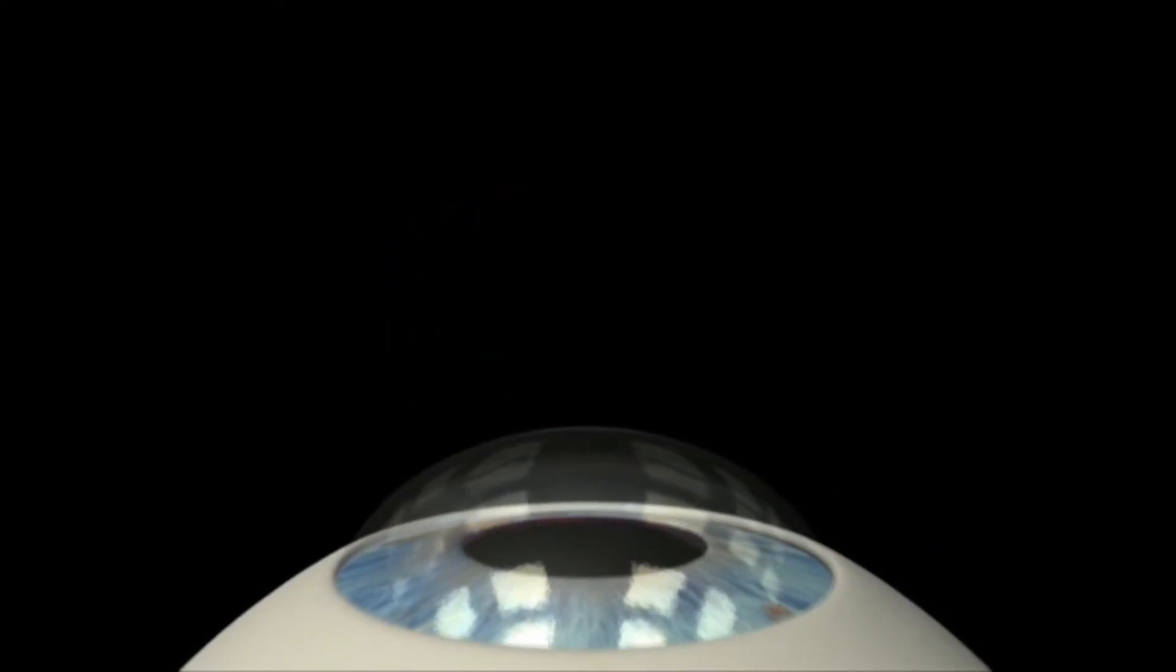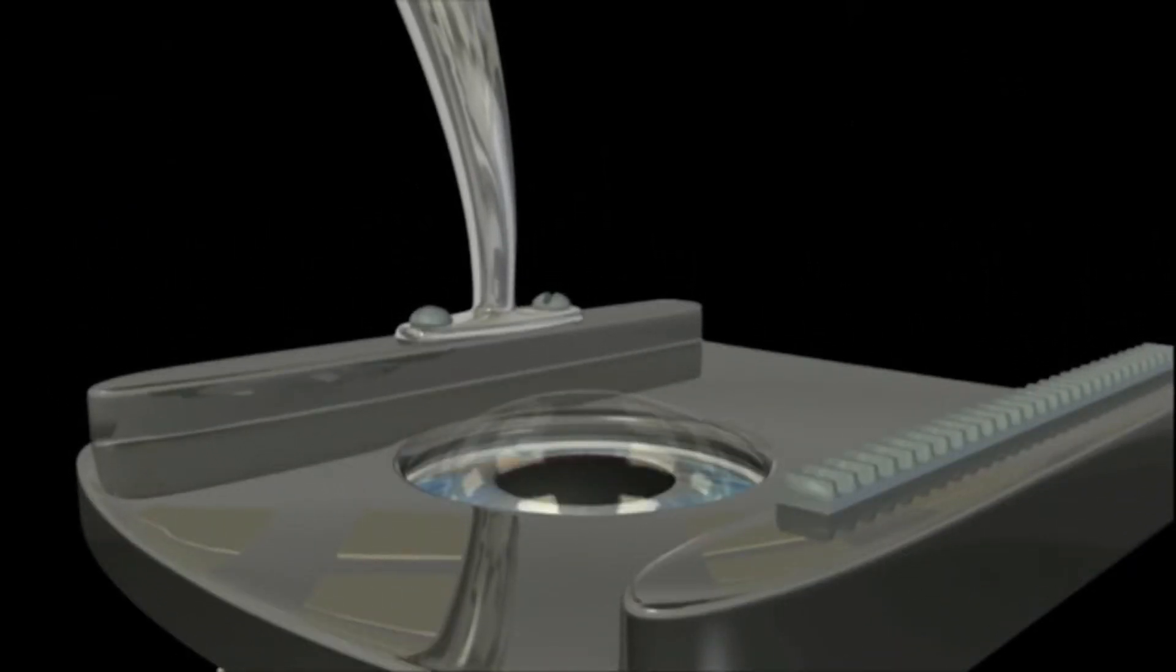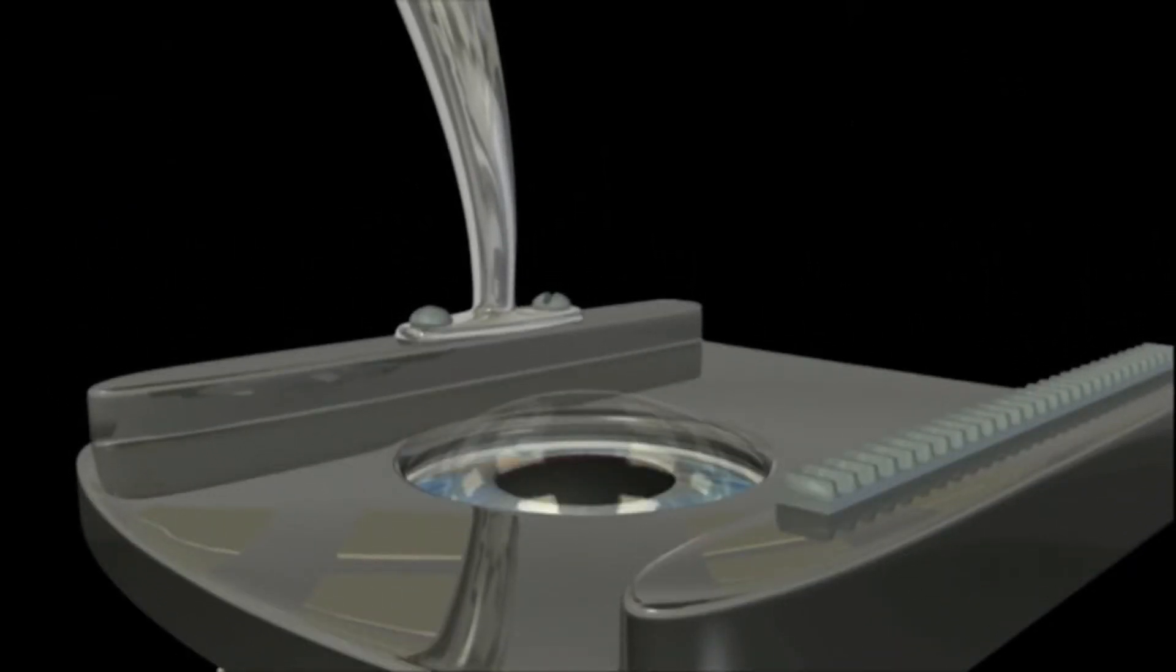The process begins with your doctor using eye drops to numb your eye. Next, a suction tool is placed on your eye to give stability to your cornea. A slight squeezing sensation may be felt at this point.